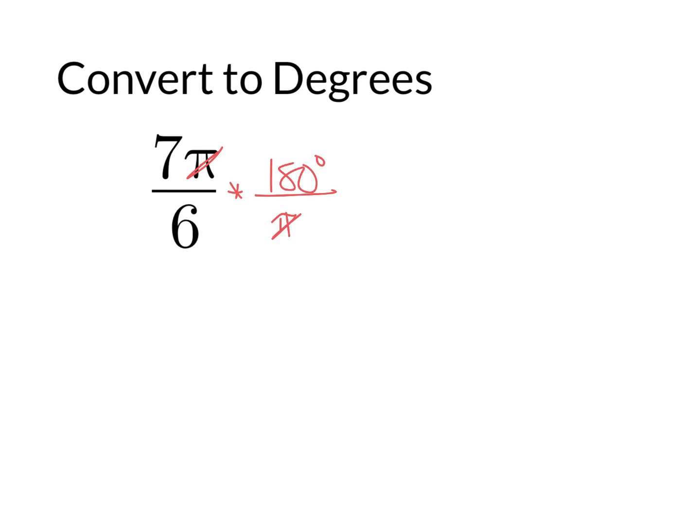We do that so the π's will cancel. We're left with 7 times 180 over 6. 6 goes into 180 30 times, so 7 times 30 degrees is 210 degrees.